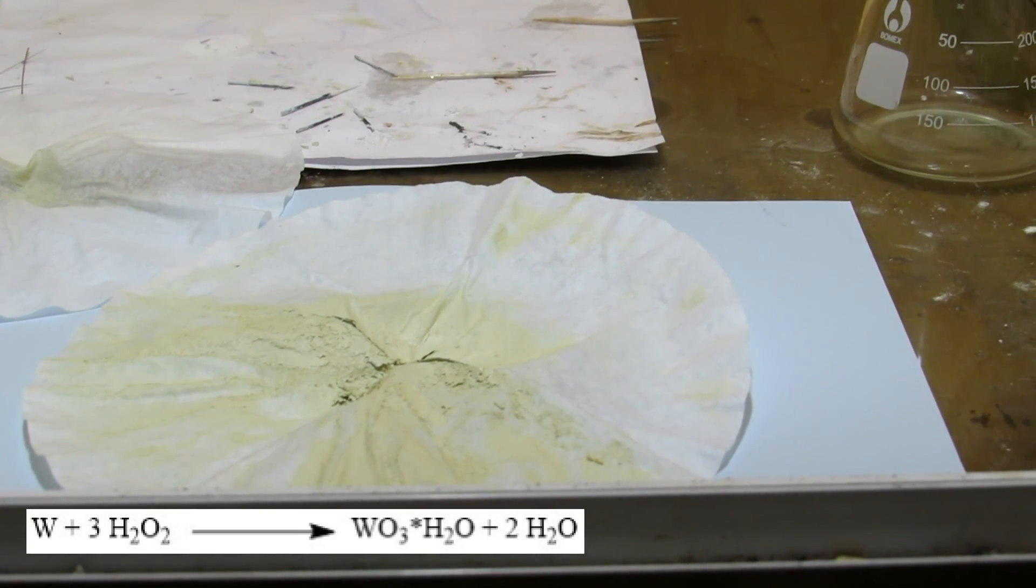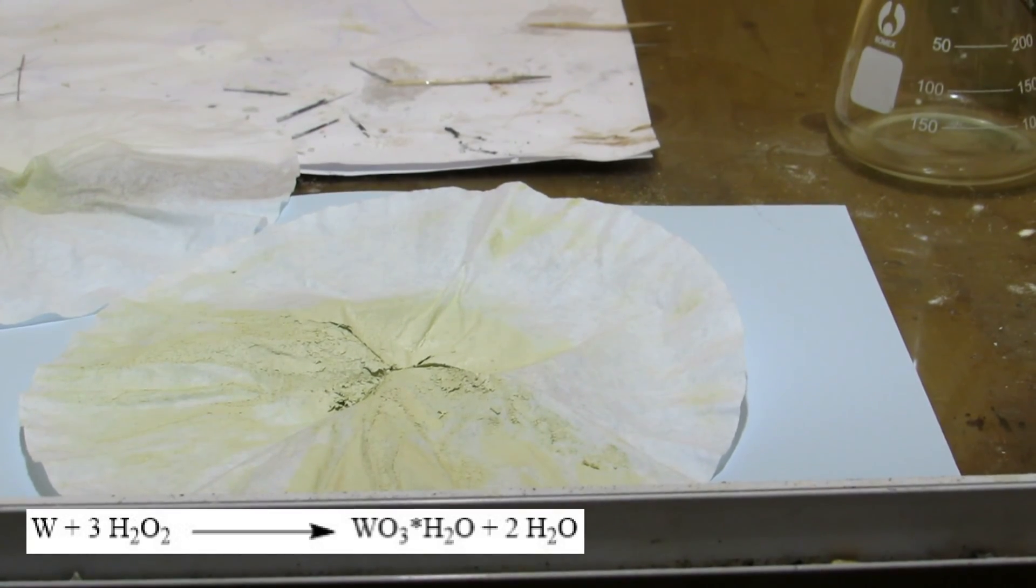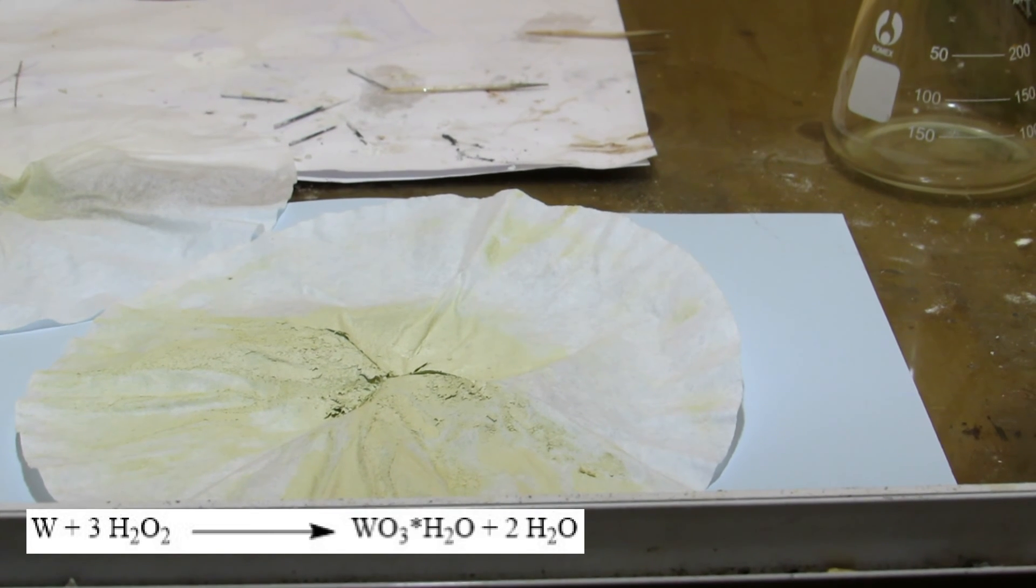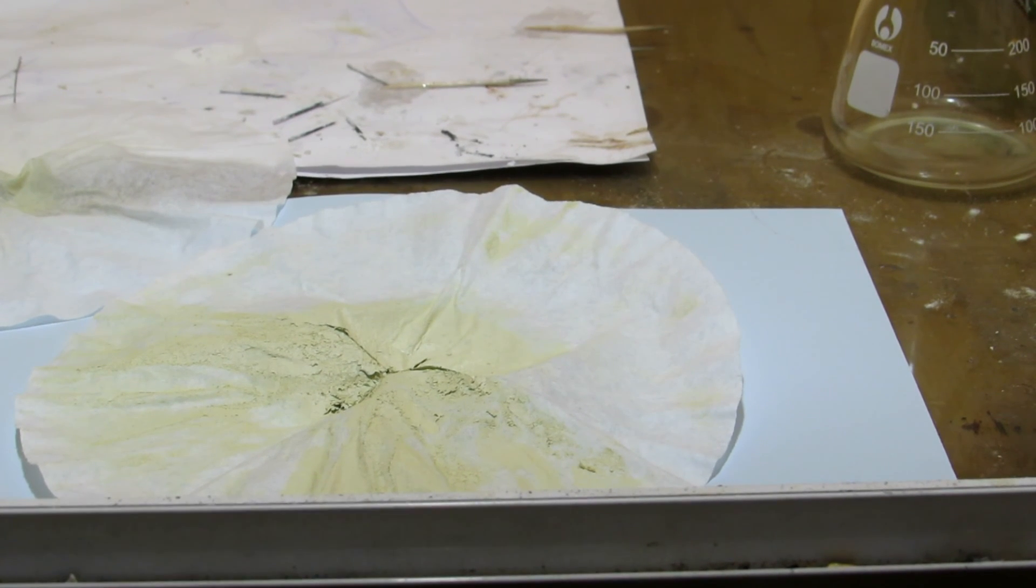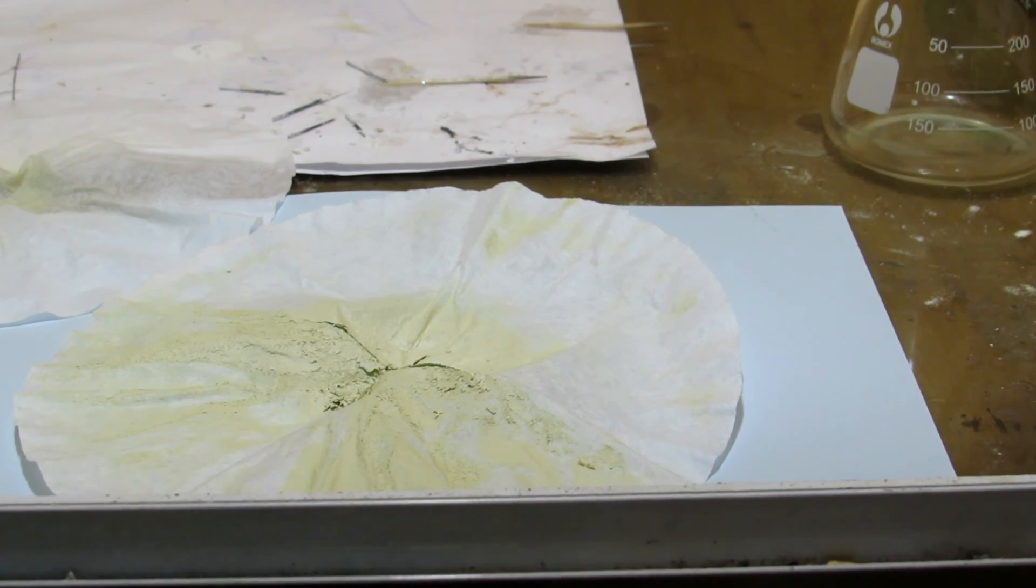After sitting in the hydrogen peroxide solution for a few days, the thorium dioxide powder lightened in color as the residual tungsten contamination dissolved. The thorium dioxide was filtered and heated to about 250 degrees Celsius to fully dry the powder.